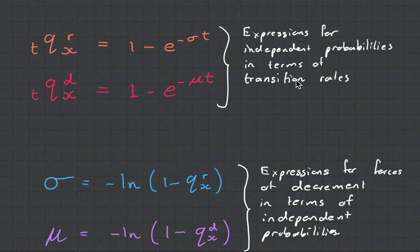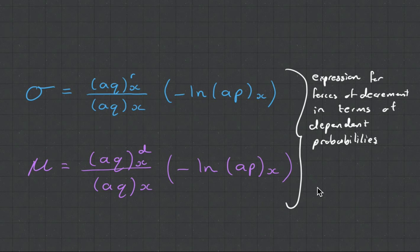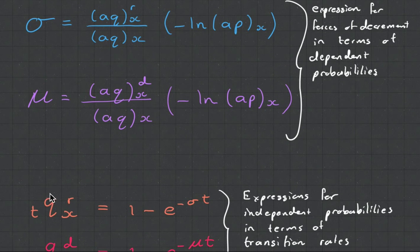This is just talking about how you can express independent probabilities as transition rates and this one is how you can express transition rates as independent probabilities and yeah this one here is transition rates as dependent probabilities. So remember you have your transition, your transitions or otherwise known as your forces and that's these guys here. You've got your dependent probabilities which is the aq and then you have your independent probabilities which is missing the a and it's just the q.